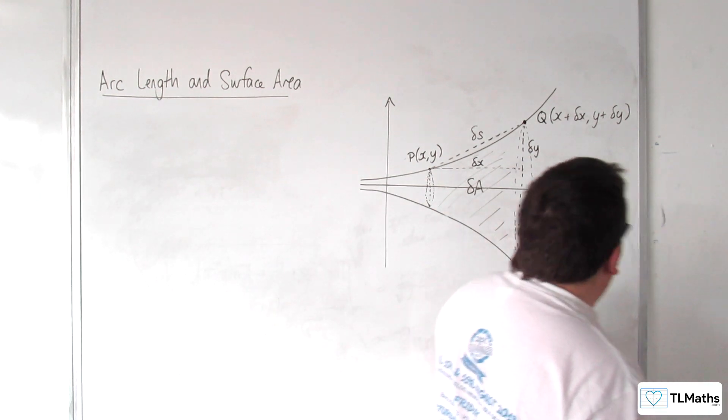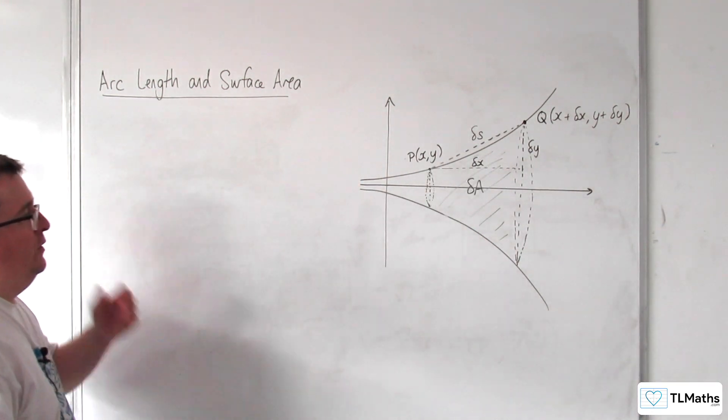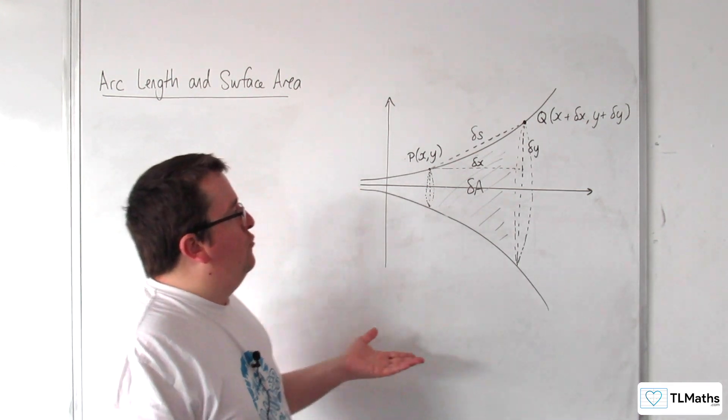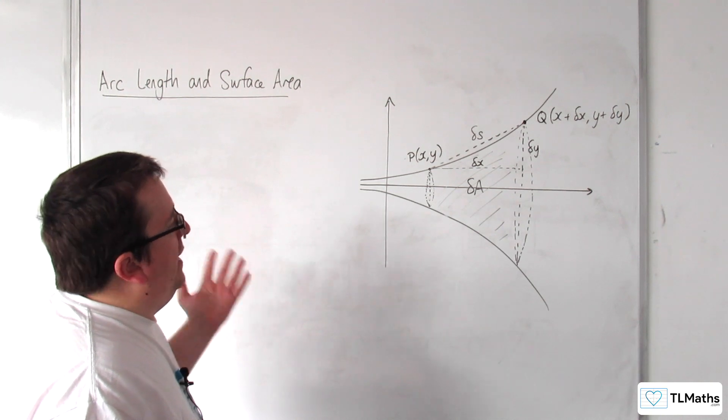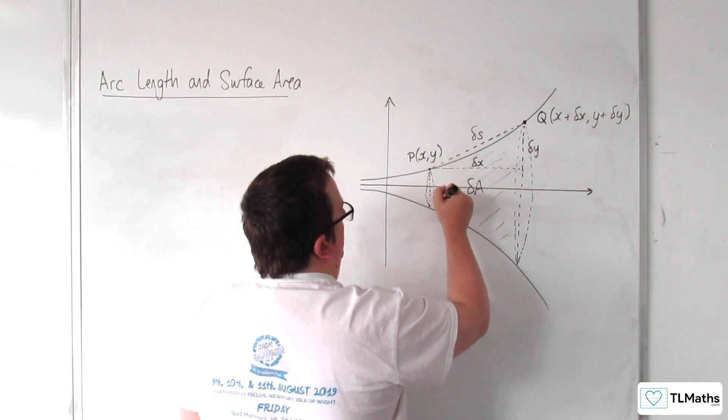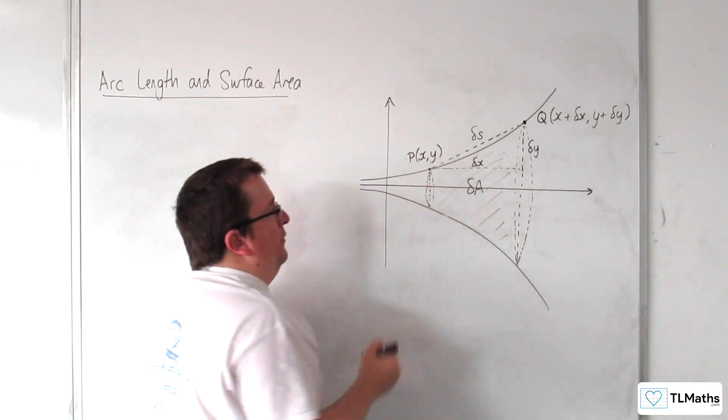So the idea is that the first thing that you could do is you could estimate the area delta A by saying, well, if we looked at this circle here, the circumference of that circle...